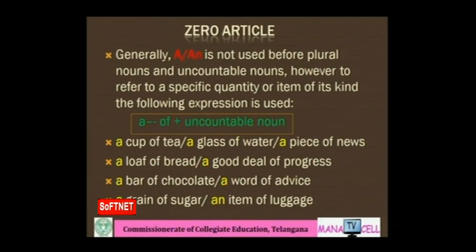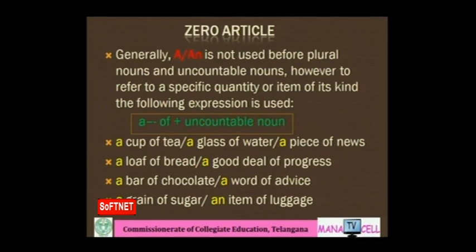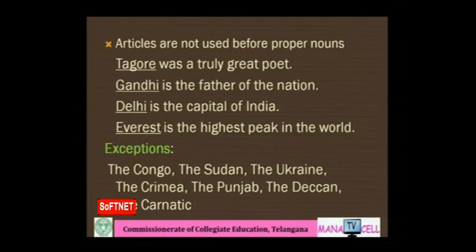Now we should also know where articles are not used. 'A' or 'an' is not used before plural nouns or uncountable nouns. However, to refer to a specific quantity, use expressions like: a cup of tea, a glass of water, a piece of sugar, a piece of news, a loaf of bread, a good deal of progress, a bar of chocolate, a word of advice, a grain of sugar, an item of luggage. Since these nouns like tea, water, news, bread are uncountable, we specify quantity using a countable word preceded by the indefinite article.